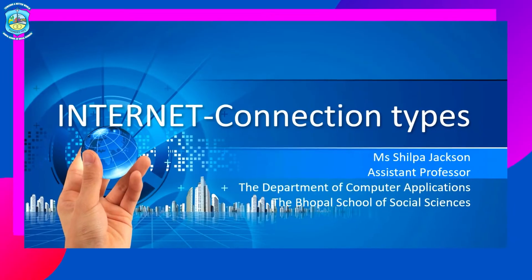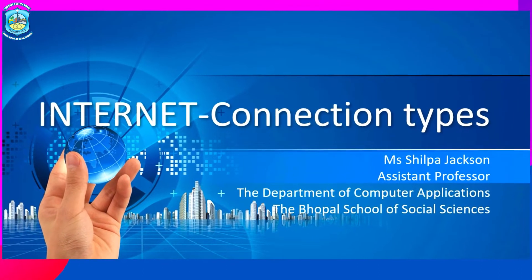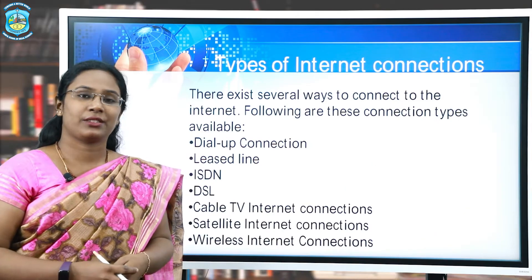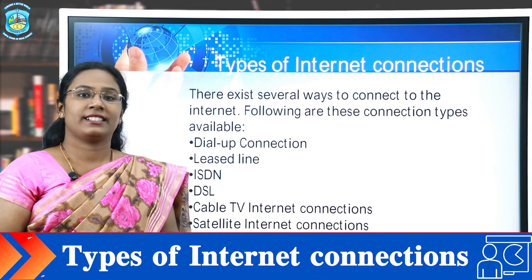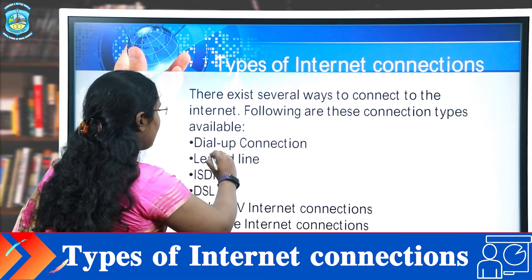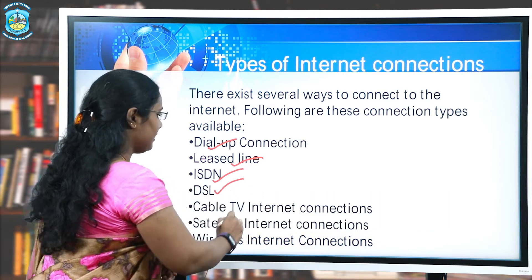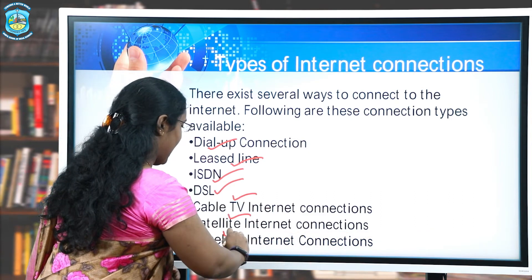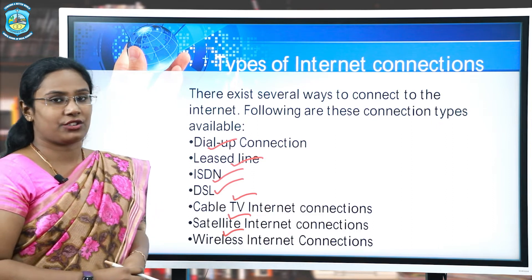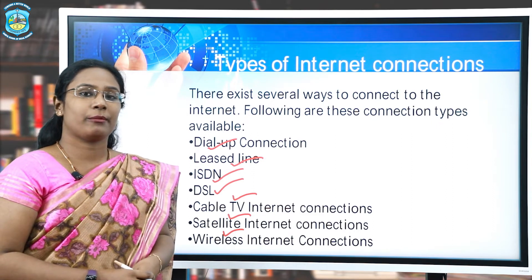Hello everyone, I'm Shilpa Jackson, Assistant Professor in the Department of Computer Applications from the Bhopal School of Social Sciences. In this video, we are going to see the different types of internet connections. There are several ways to connect to the internet. The different types are Dial-up Connection, Lease Line, ISDN, DSL, Cable TV, Satellite, and Wireless Internet Connection. Let us see about them one by one.